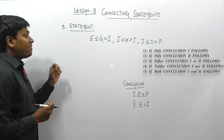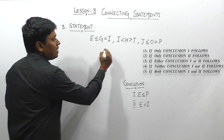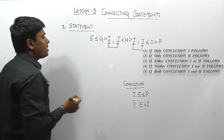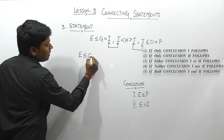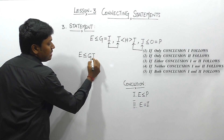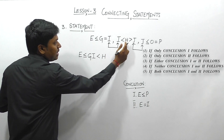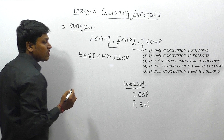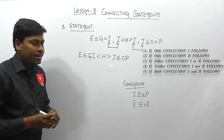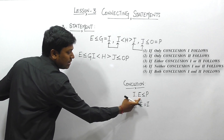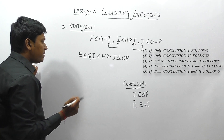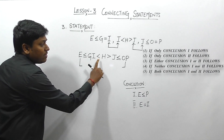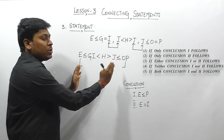Question 3 has three statements. Statement 1 ends at I and statement 2 starts at I; statement 2 ends at J and statement 3 starts at J. Connecting them: E ≤ G = I < H > J ≤ O = P. Since G and I are equal, they are written as GI; O and P are equal, written as OP.